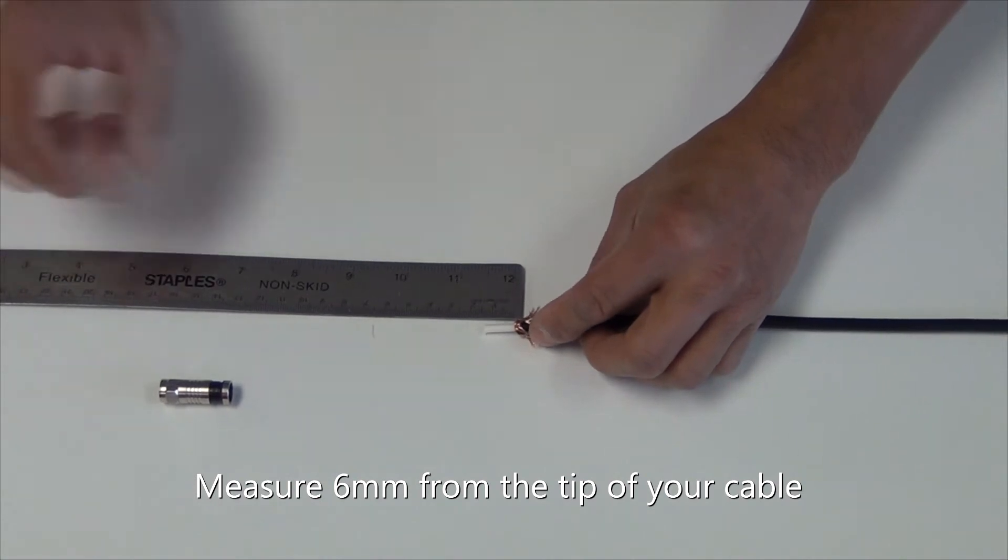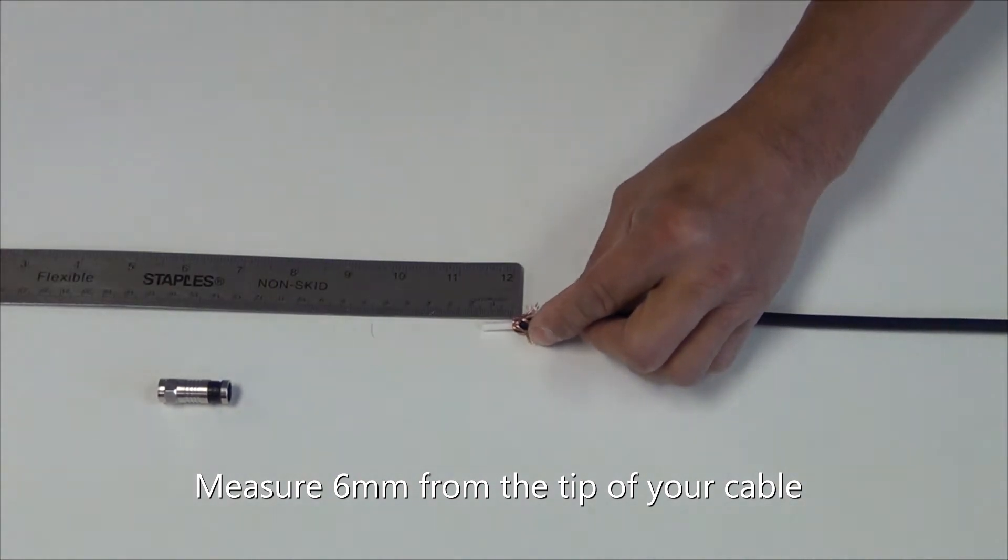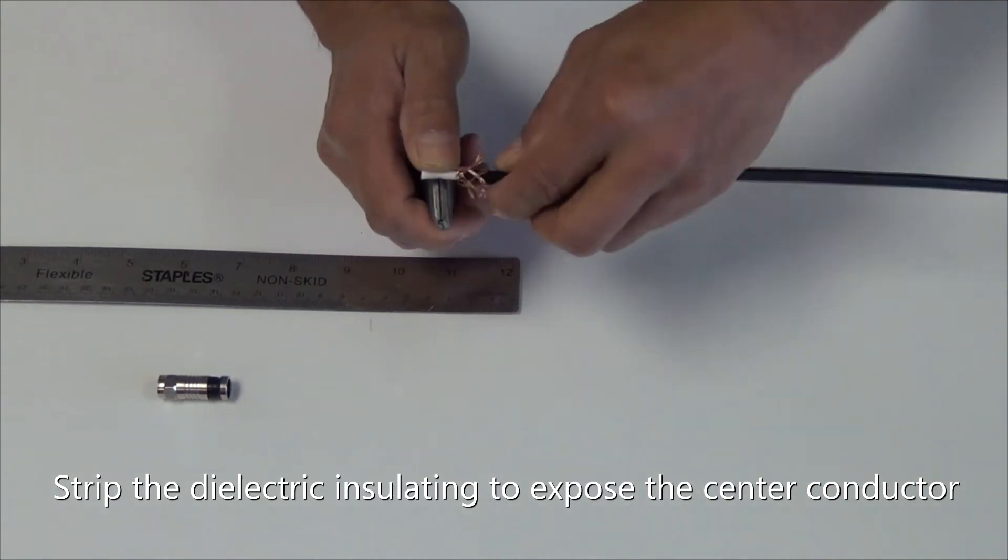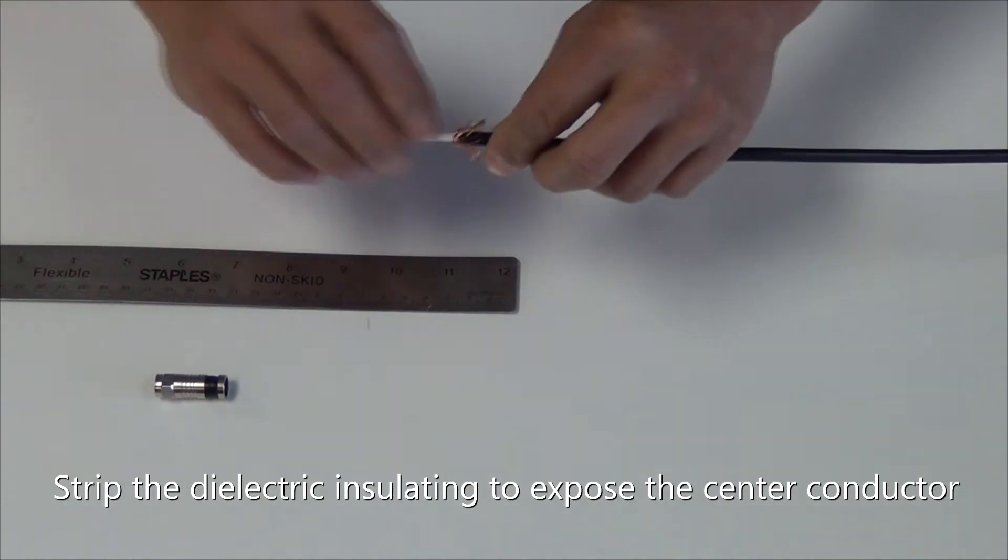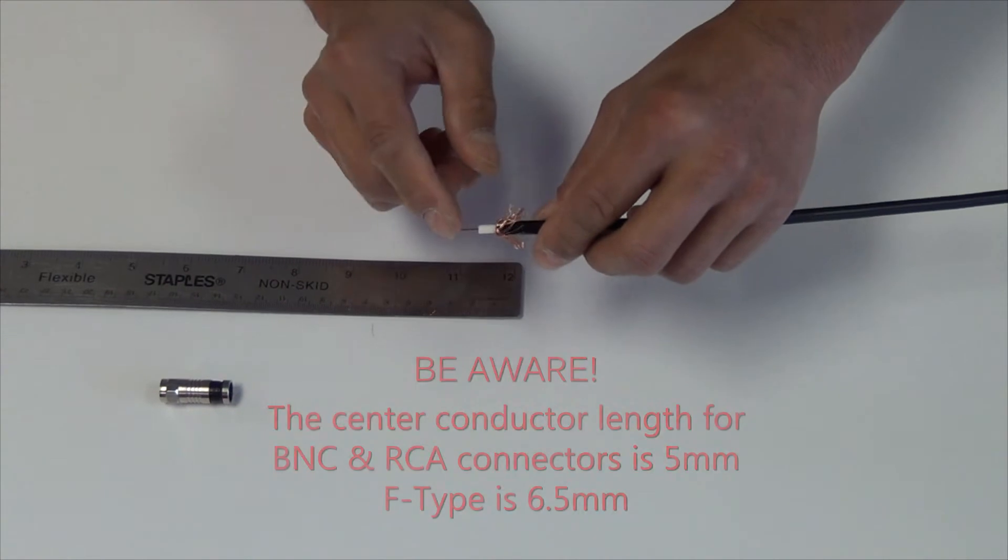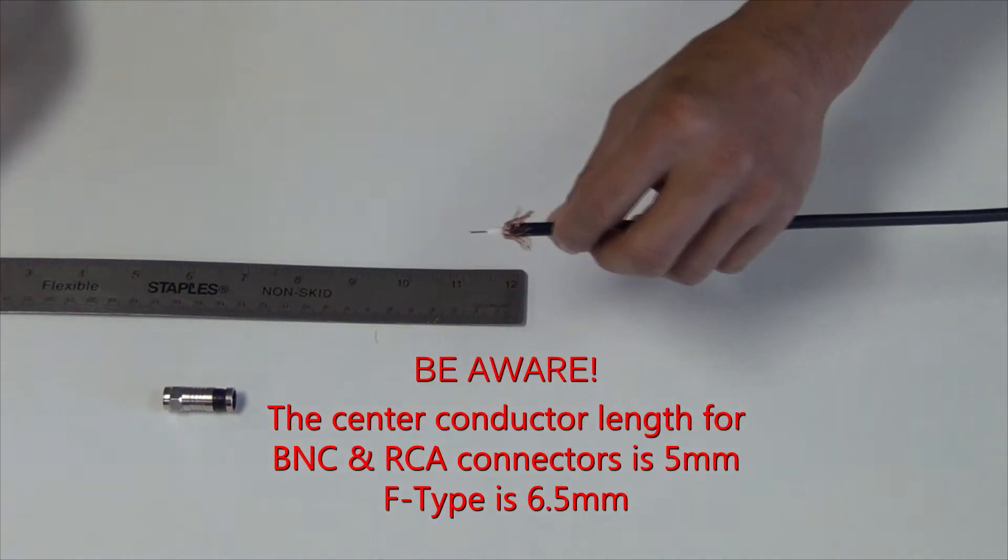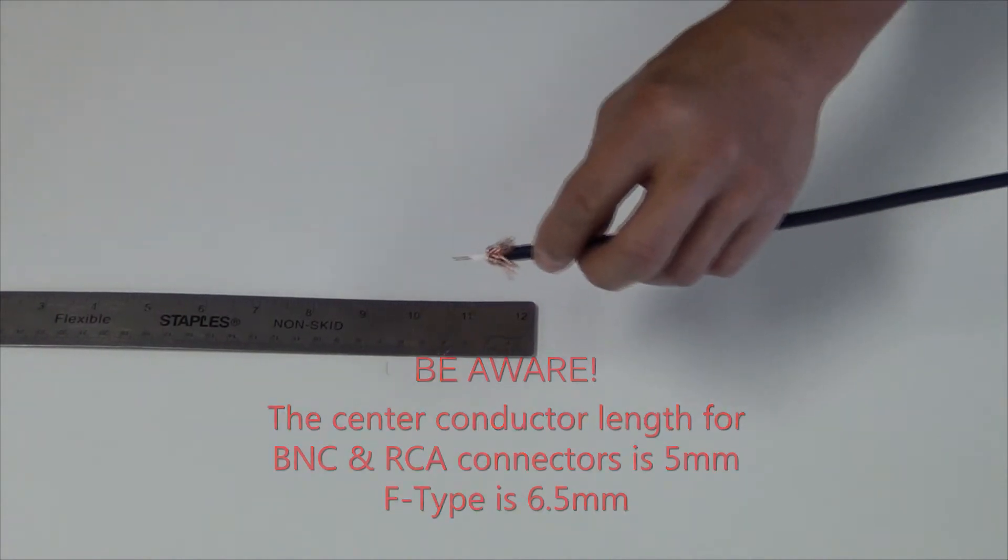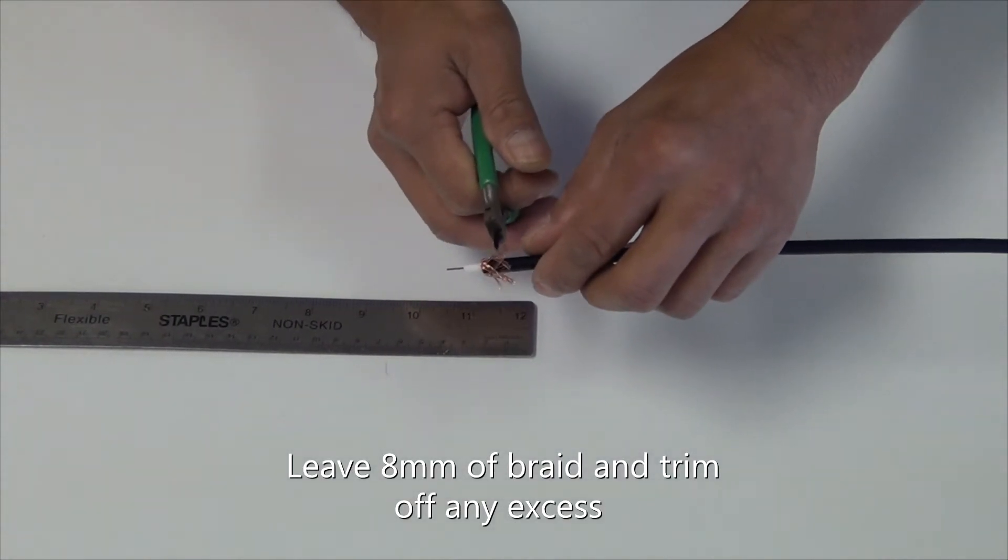Measure 6 millimeters from the tip of your cable. Strip the dielectric insulation to expose the center conductor. Be aware the center conductor length for BNC and RCA connectors is 5 millimeters, F-type is 6.5 millimeters. Leave 8 millimeters of braid and trim off any excess.